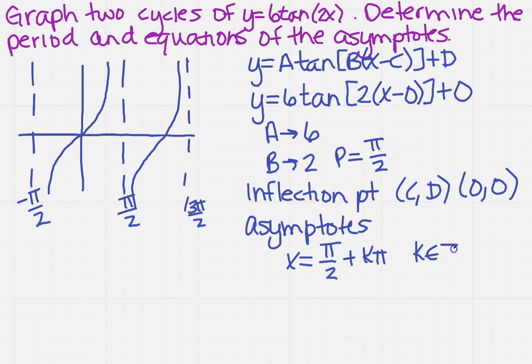Remember, that's for any integer of k. So if we have that, then we can find out where our vertical asymptotes are. Again, they're going to be exactly in the same place as they were from the original.